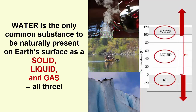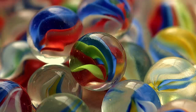To understand that, we first have to describe the basic differences between solids, liquids, and gases. As we know, all substances are made up of individual atoms. Let's imagine those atoms as marbles. To understand phases and temperature and heat, we first need to understand the concept of kinetic energy.